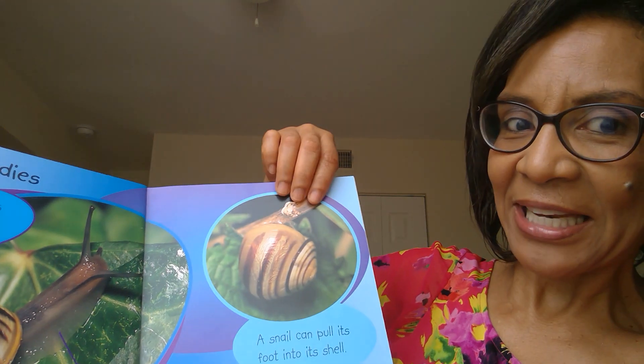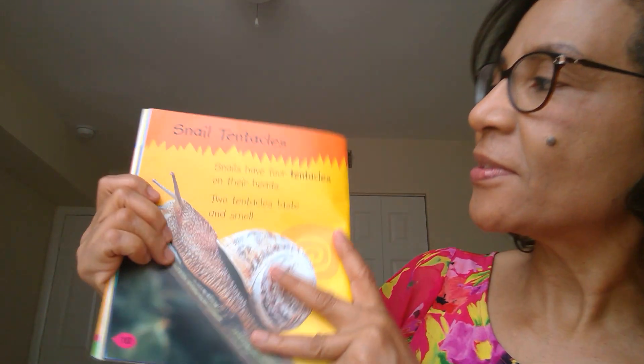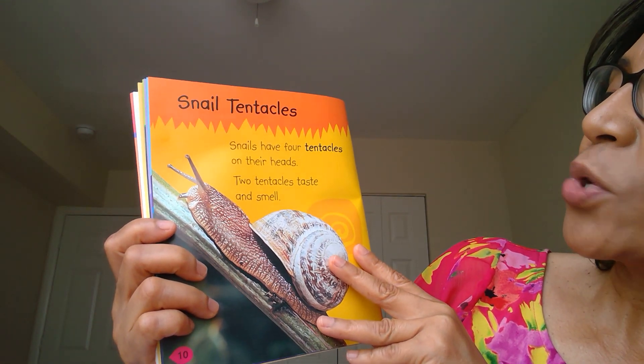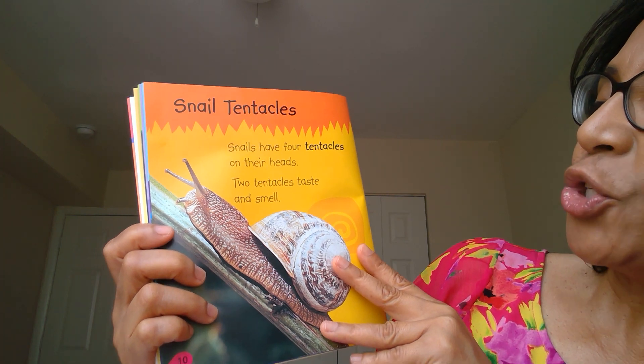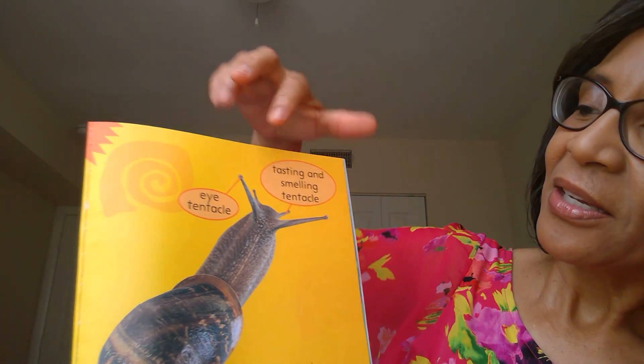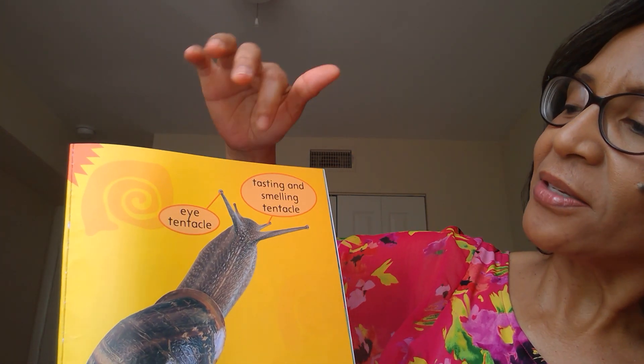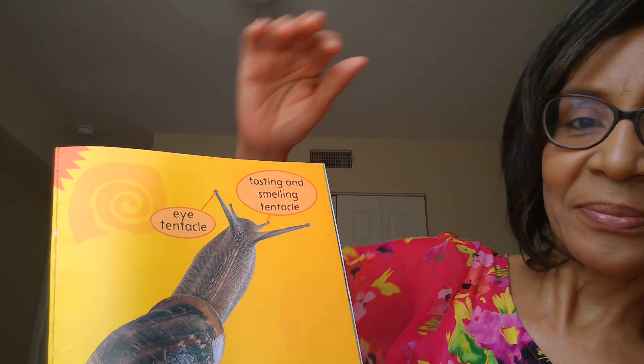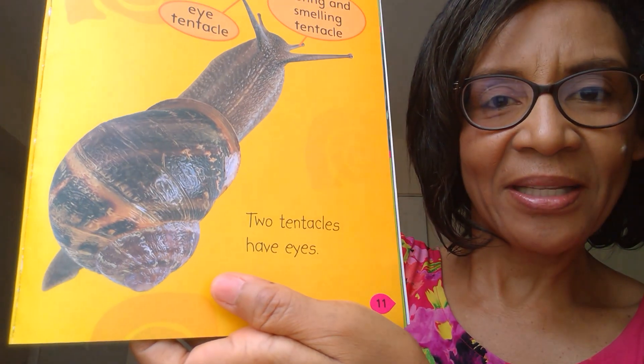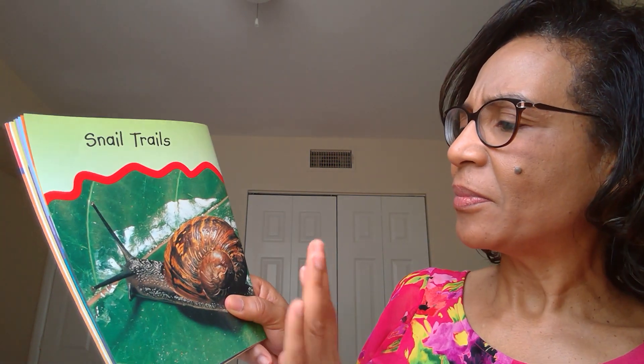'Snail Tentacles — snails have four tentacles on their heads. Two tentacles taste and smell, and two tentacles have eyes.' Here are their eye tentacles and the tasting and smelling tentacles. Have you seen that? I love these bright pictures and these bolded words as well.